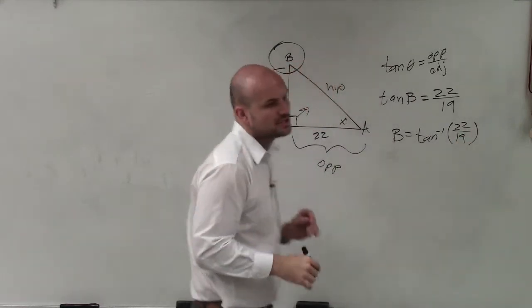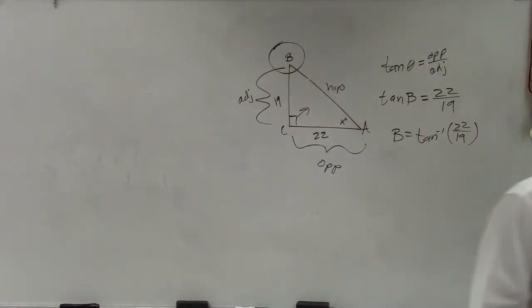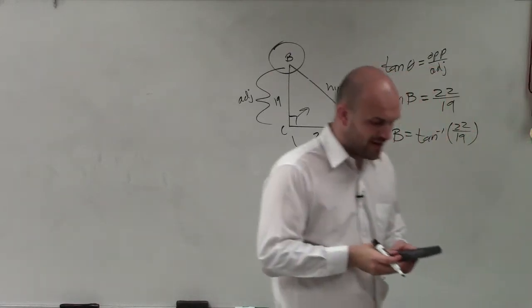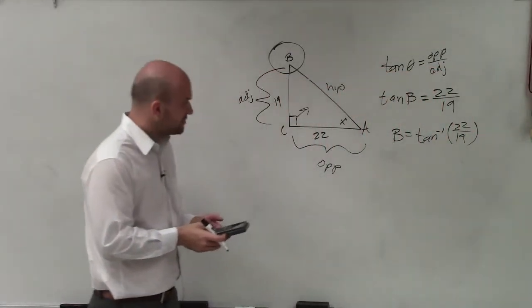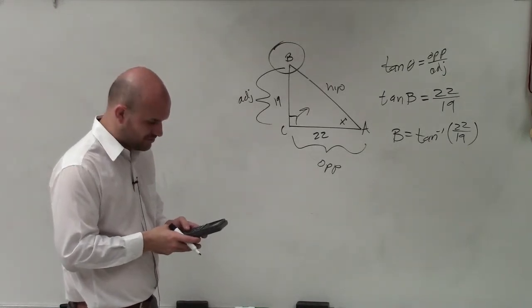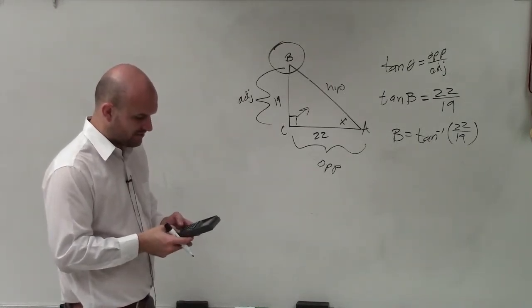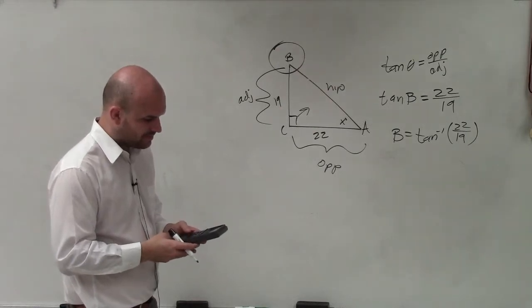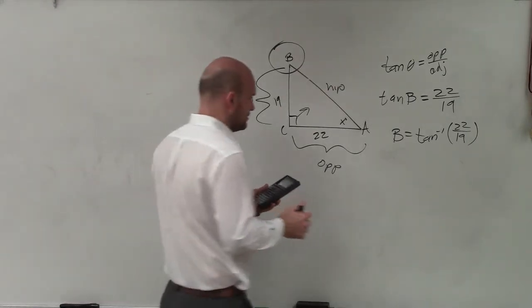I know some of you guys are a little bit limited on your technology, but from here on out for this test, guys, you're going to make sure you have one. So therefore, we'll just take inverse tangent of 22 divided by 19. And we get 49.18.